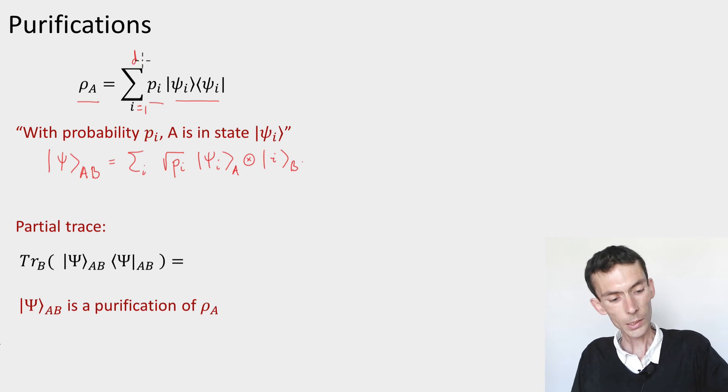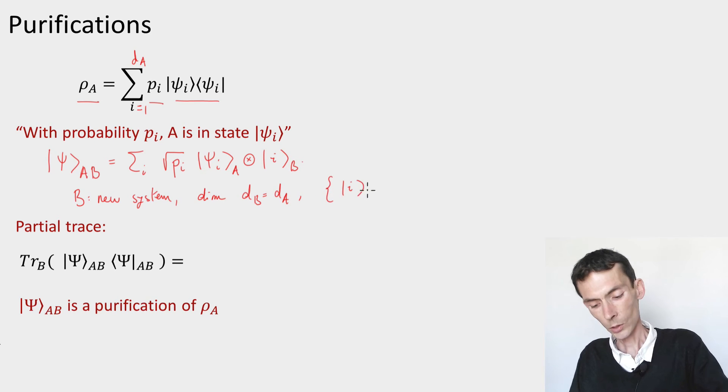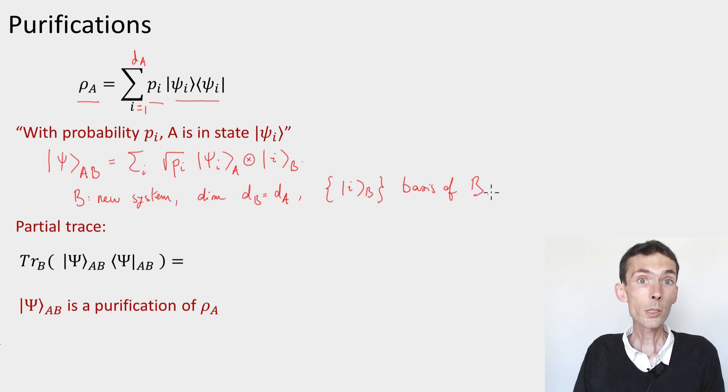Where B is a new system, let's have this index i range up to the dimension of the system B. So B, this is a new system. It has the same dimension as the A system, and it has a basis that I called i. So this is certainly a pure state. It's a valid state. It's normalized, because the norm of psi will be the sum of the pi's, which is 1, because rho A was a normalized density matrix.